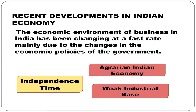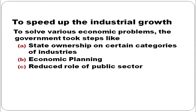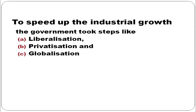During the time of independence, India was an agrarian economy. At that time, we had a weak industrial base. To solve various economic problems and to speed up industrial growth, the government took steps like state ownership on certain categories of industries, economic planning, and a reduced role of the public sector. The major developments which the government took at that time were liberalization, privatization, and globalization — done to speed up industrial growth.